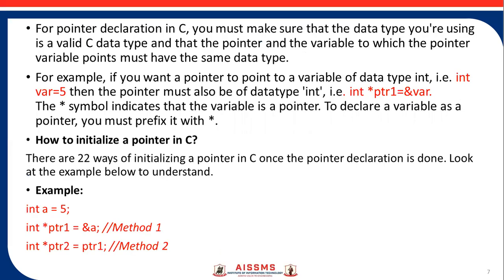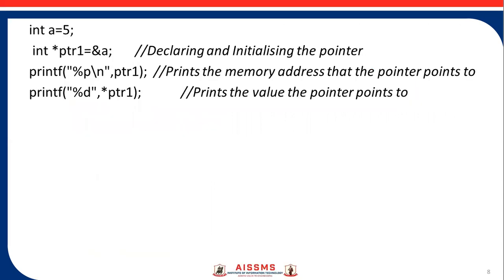How to initialize a pointer in C? There are two ways of initializing a pointer in C once the pointer declaration is done. Look at the example below to understand. For example, int a = 5. Then int* ptr1 = &a - this is method 1. And then, int* ptr2 = ptr1 - this is method 2.